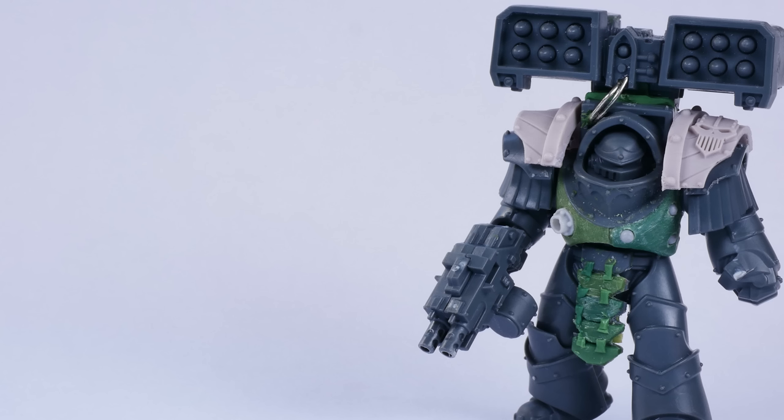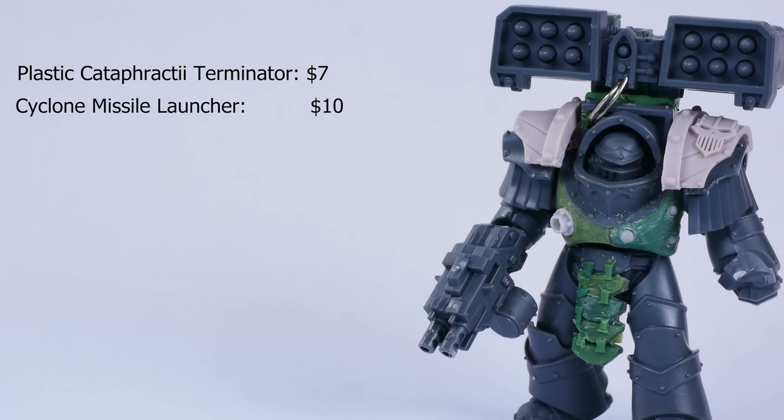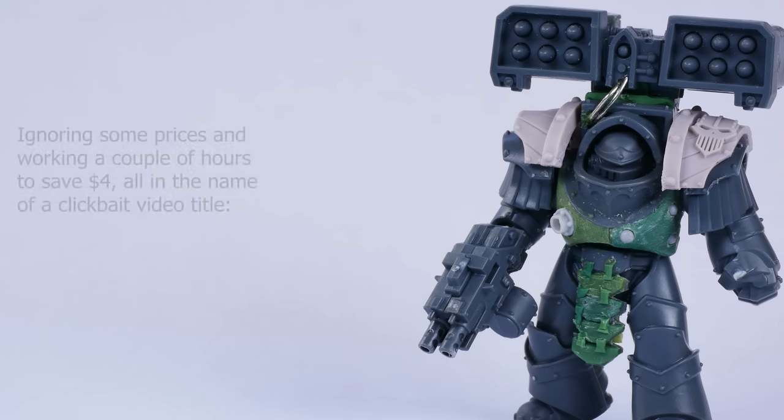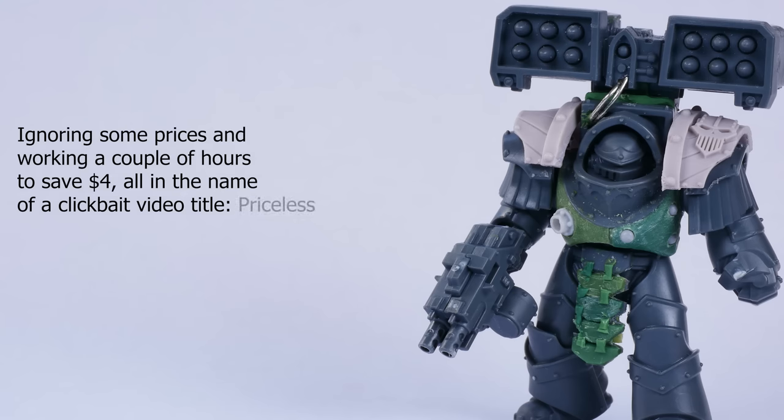All in all, this model cost $7 for the plastic Cataphractii, $10 for the cyclone missile launcher, and let's say maybe $3 in Zinge Industries bits and green stuff, giving us a grand total of $20 for this model as compared to $24 for the official Forge World one. A large chunk of this cost is driven by the missile launcher bits, so if you had them already from another project like I did, or from a buddy who doesn't need them, the cost of this project goes way down.